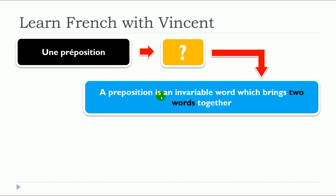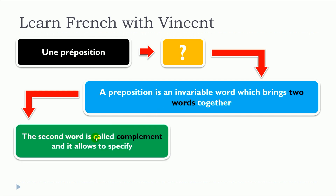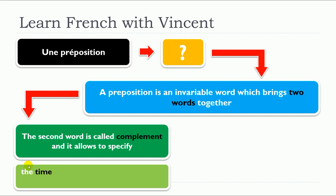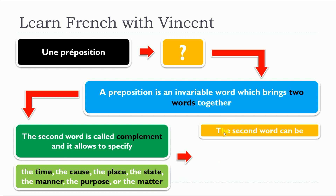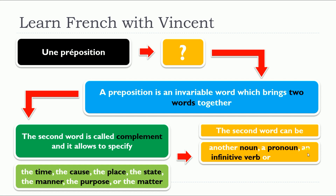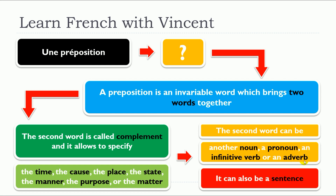A preposition is an invariable word which brings two words together. The second word is called complement, and it allows to specify the time, the cause, the place, the state, the manner, the purpose, or the matter. The second word can be another noun, a pronoun, an infinitive verb, or an adverb. Remember that this complement can also be a sentence.